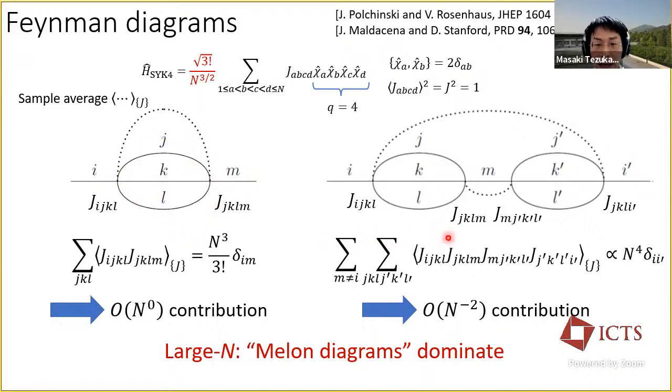We can show that only a certain type, melon type of diagrams survive after we take the average of our couplings in the large N limit by comparing these two diagrams as examples. The first diagram averages to non-zero if the two couplings are the same. For each I, the number of non-zero diagrams is on the order of N to the third, which is then multiplied by the overall coefficient, this one squared, which is N to minus third. So the contribution of this type of diagram is order one. On the other hand, in the diagram to the right, they are on the order of N to the fourth. But there are four couplings, so the overall constant is on the order of N to minus six. So the contribution is one over N squared.